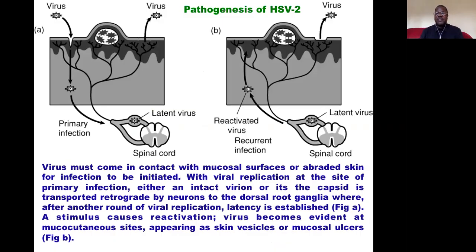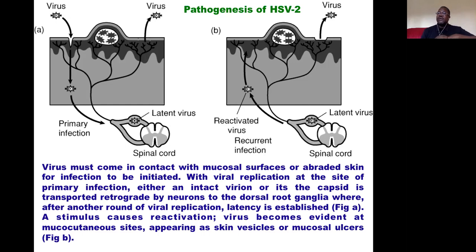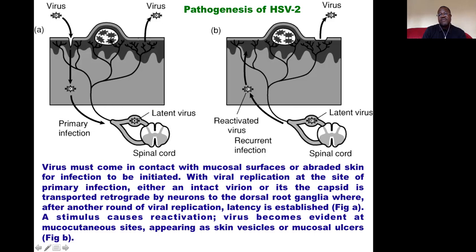Let's look at the pathogenesis of HSV-2 infection. When you come into contact with HSV-2 through broken skin or epithelium on the mucosal surface of the genital area, there is an initial local viral replication at the site of primary infection. Following that, the intact viral capsid is transported in retrograde along the nerves toward the spinal cord.